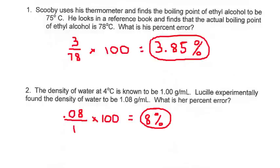You divide it, then you multiply it by 100, and so your percent error is 3.85%.